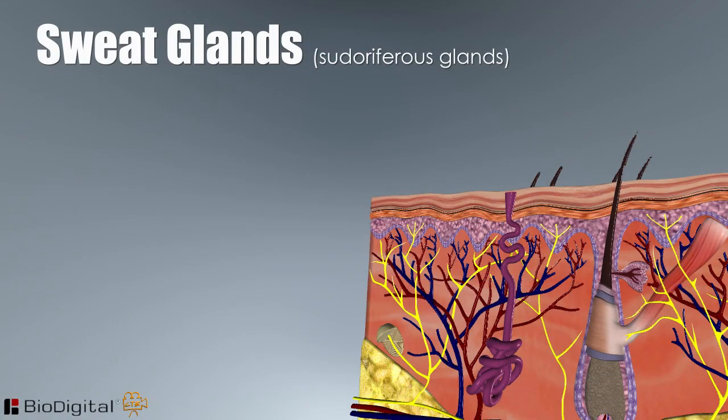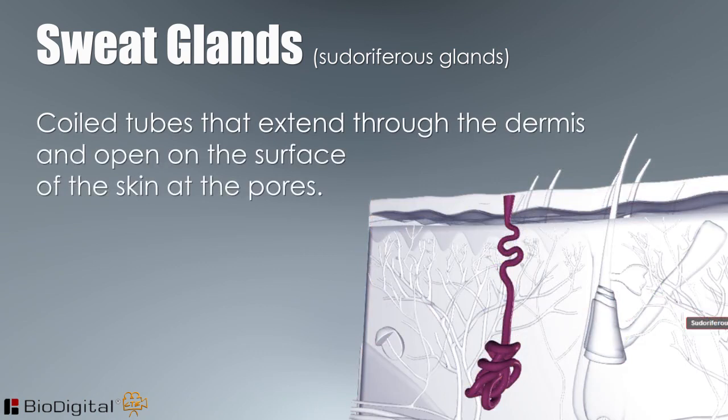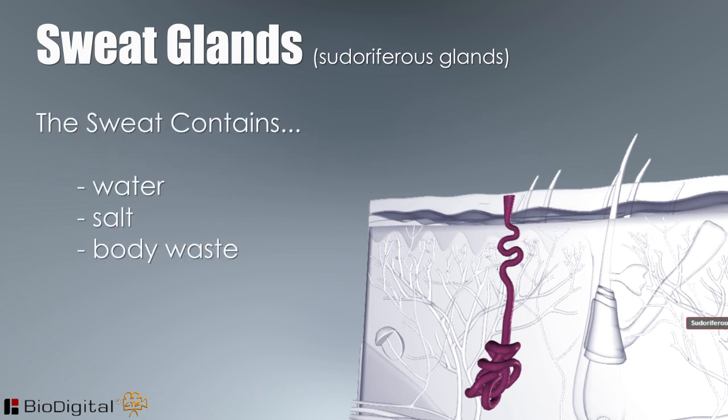Sweat glands, or sudoriferous glands, are coiled tubes that extend through the dermis and open on the surface of the skin at the pores. The sweat or perspiration eliminated by these glands contains water, salt, and some body wastes.